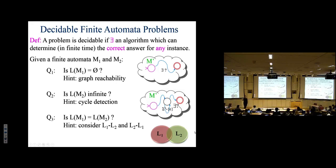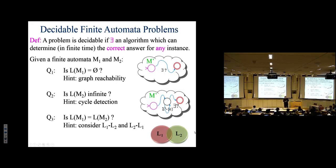Use the subroutine from part one in part three. Call it twice — once on each of the two crossed machines. If both differences are empty, the languages are equal. We already have a subroutine that determines emptiness of a machine's language, so just use it. That's your complete algorithm.